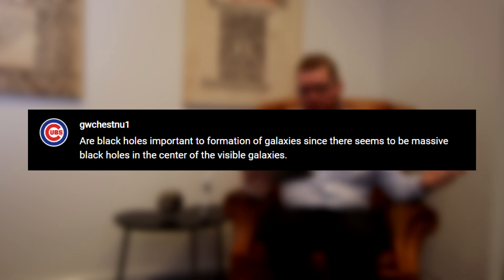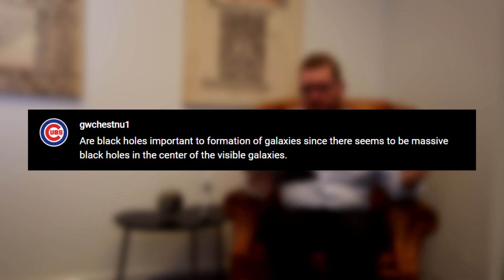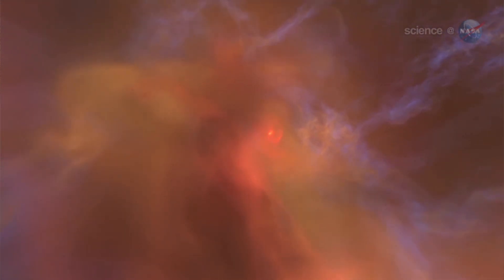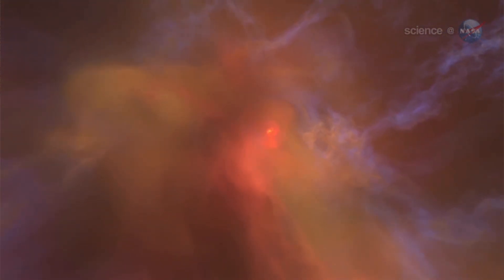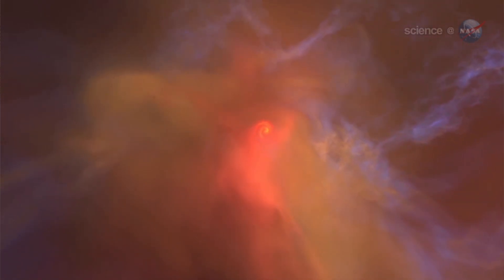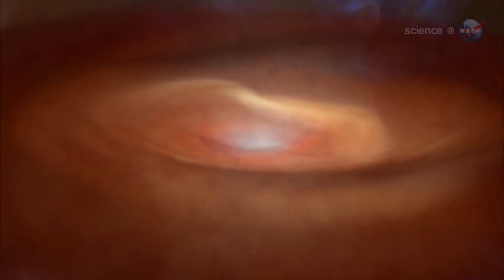The next question comes from GV Chesnou, who asks: are black holes important for the formation of galaxies, since there seem to be massive black holes at the center of visible galaxies? To answer that, we need to head back to the very early stages of the universe, where we don't have a lot of stars — just a lot of gas spread out everywhere. The gas begins to clump together and we begin to see some of the first stars, which are believed to have been very, very big — probably way bigger than anything we see today.